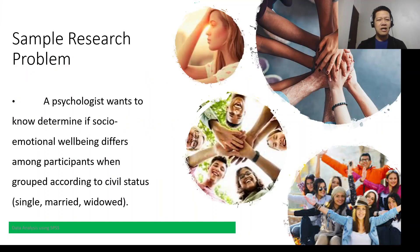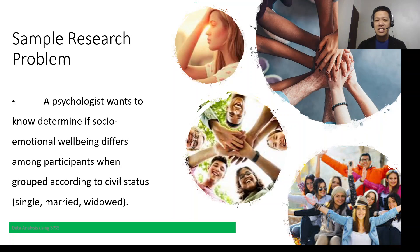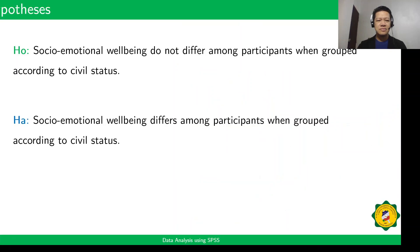In this example research problem, we assume that all those assumptions were satisfied. A psychologist wants to determine if socio-emotional well-being differs among participants when grouped according to civil status. The null hypothesis is that socio-emotional well-being does not differ among participants when grouped according to civil status. The alternative hypothesis is that it does differ.